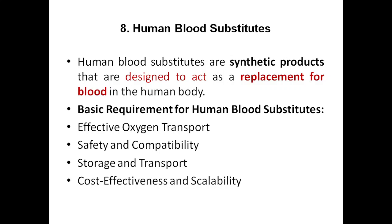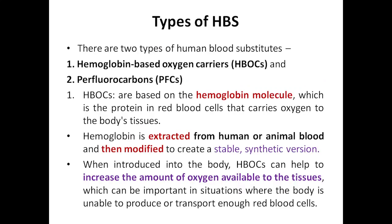These are the basic requirements for human blood substitutes. There are two types: the first one is HBOC — Hemoglobin-Based Oxygen Carrier — and the second one is PFC — Perfluorocarbons, which we will discuss in the coming slides. HBOC will just mimic the property of the hemoglobin molecule, that is why it is called a hemoglobin-based oxygen carrier.